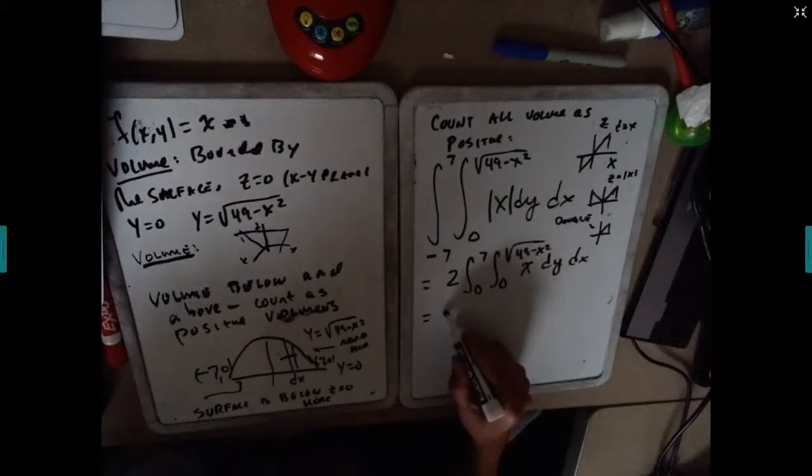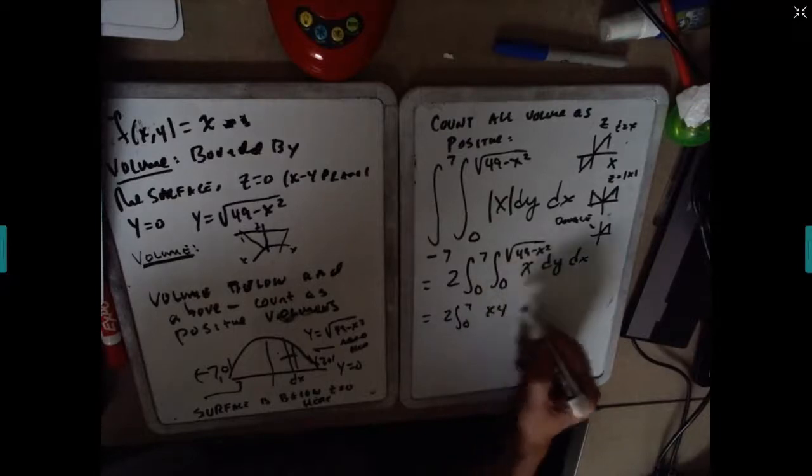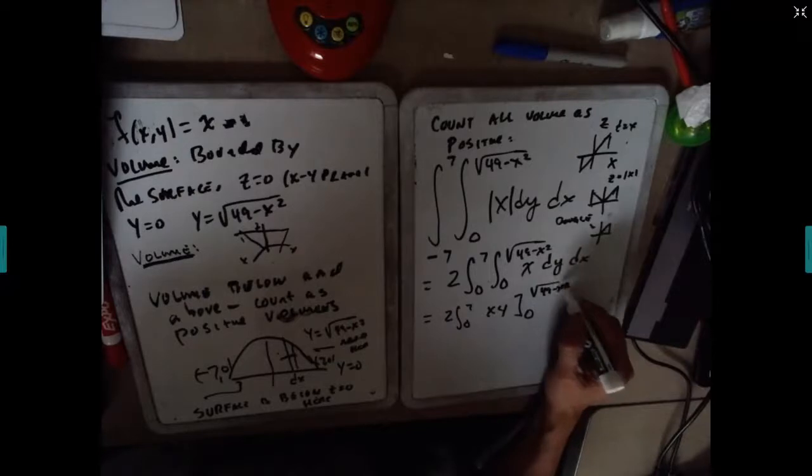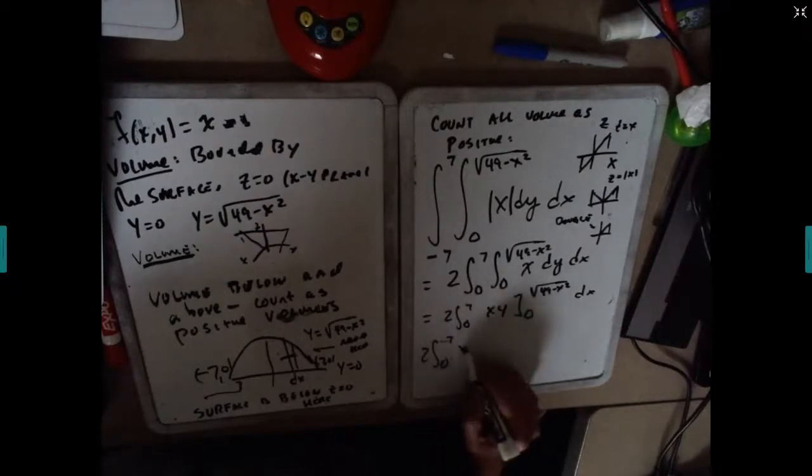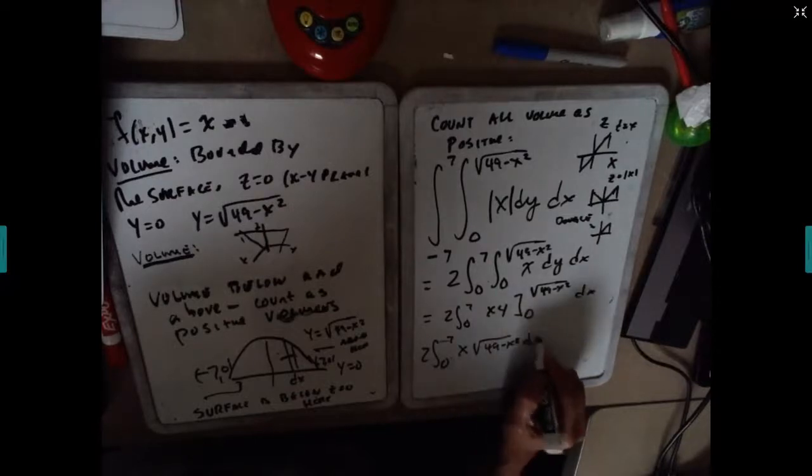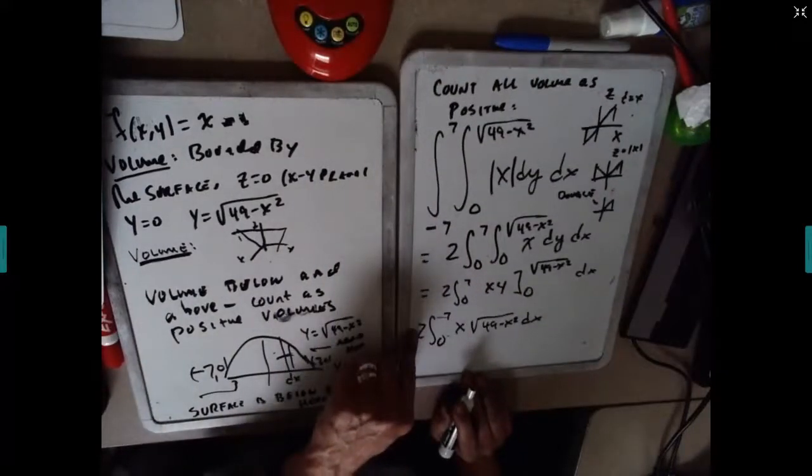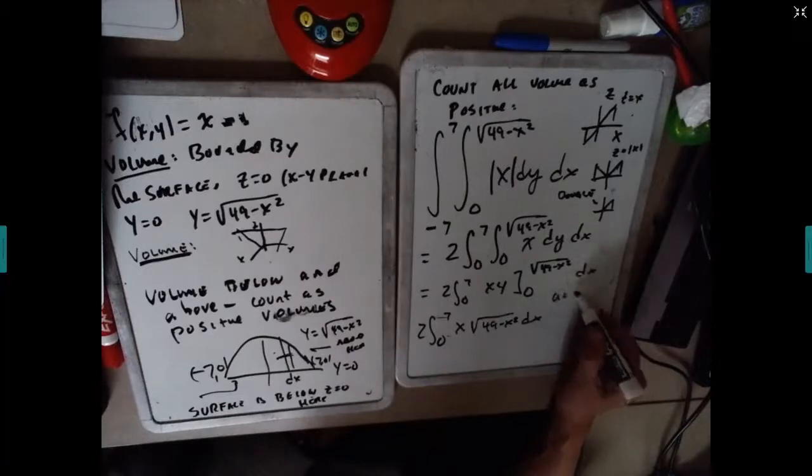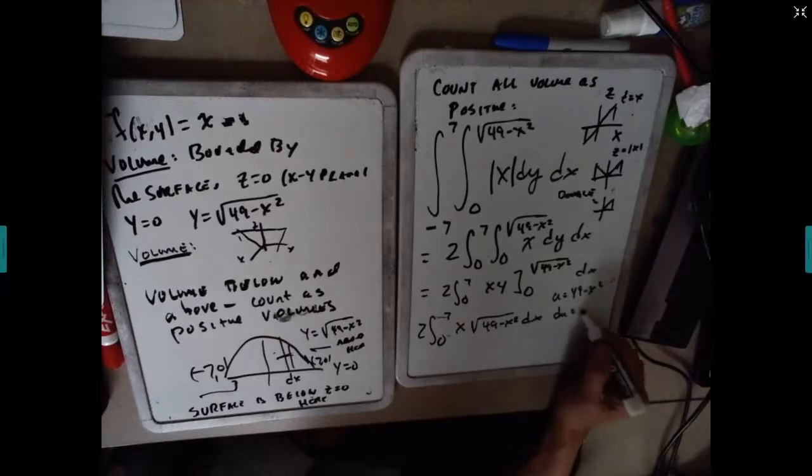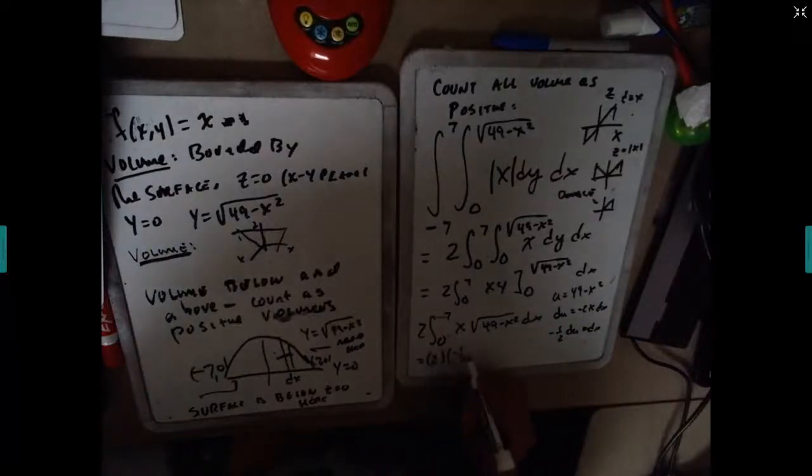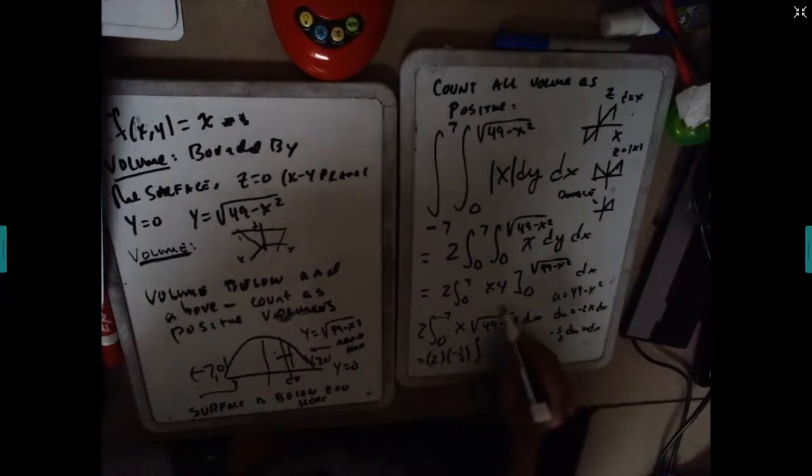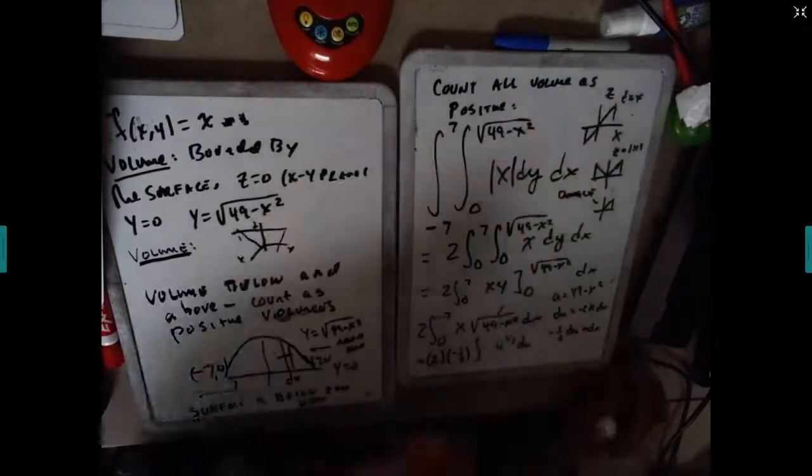Now when we do this, the integral is not too bad. x times y evaluated between 0 and square root of 49 minus x squared. And then doing this quickly, we have 2 times the integral from 0 to 7 of x square root of 49 minus x squared dx. Now this is a u substitution with u equals 49 minus x squared, du is minus 2x dx, so minus one half du equals x dx. So it's 2 times minus one half times the integral - this is now your u.